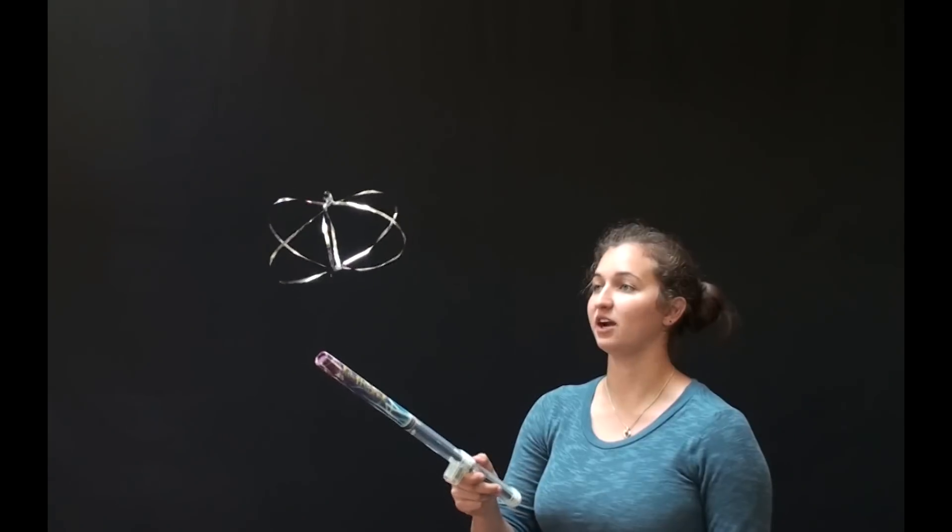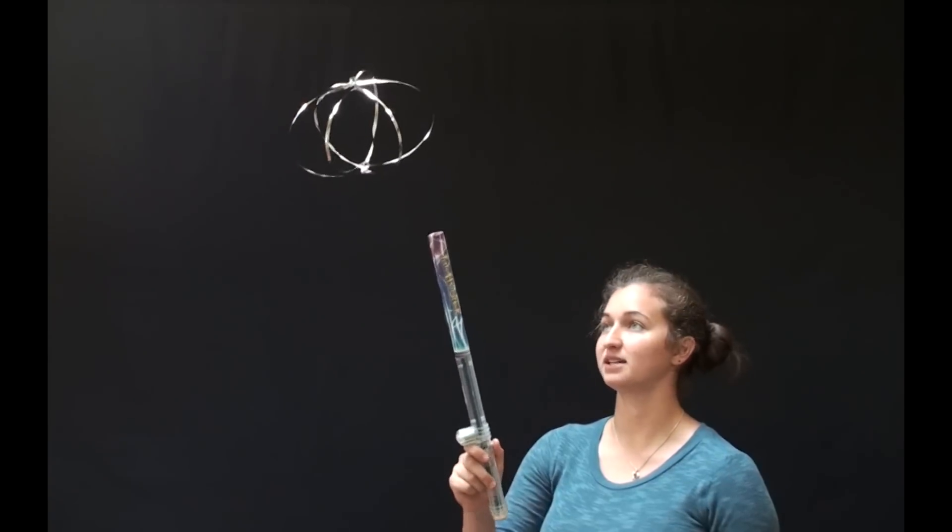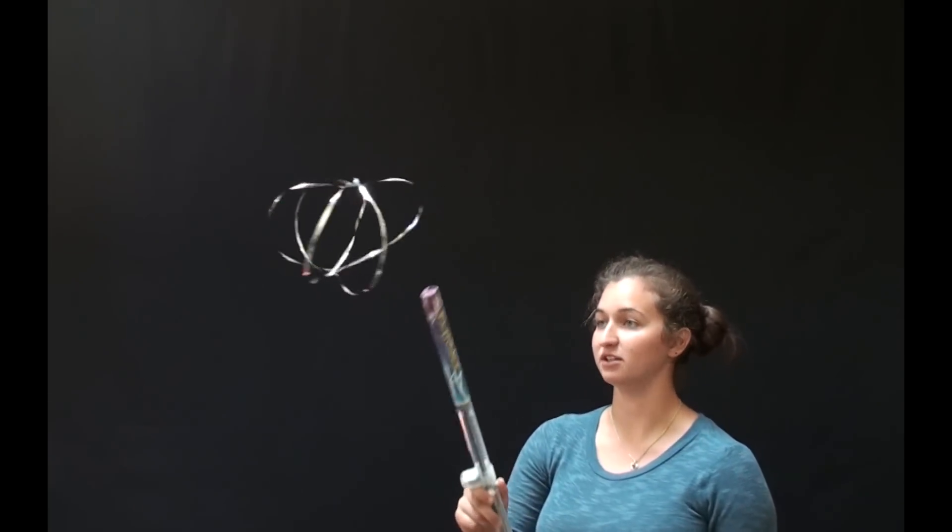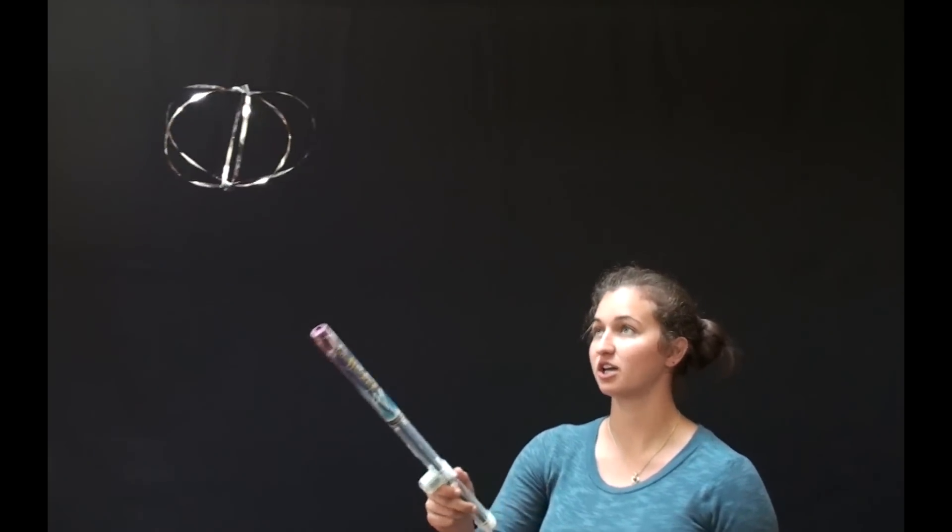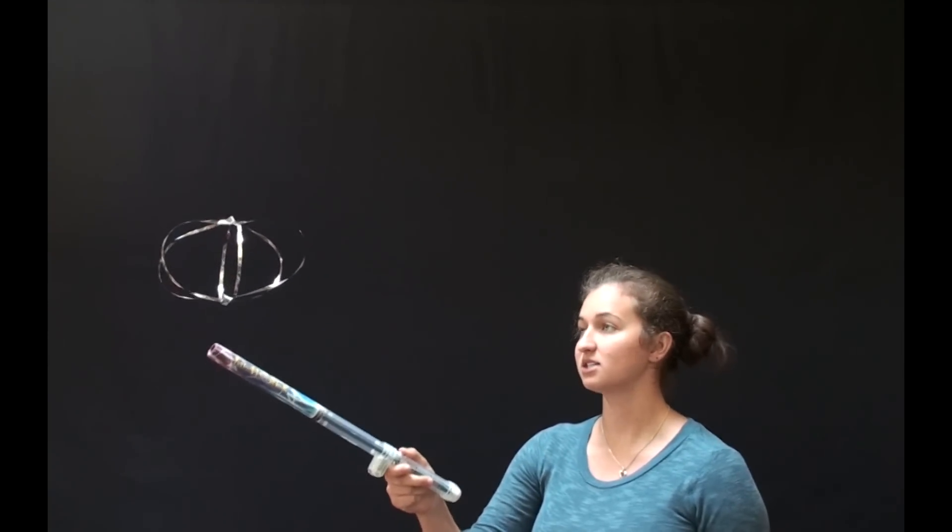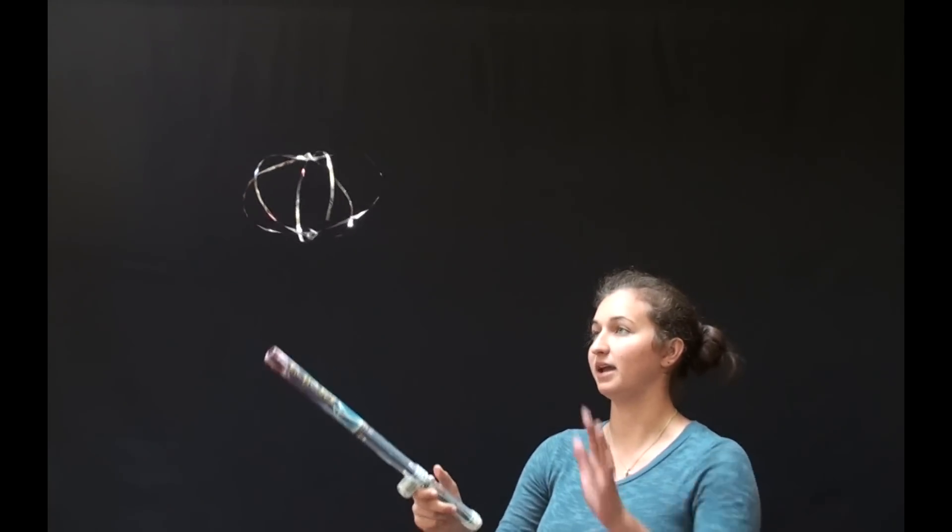When the mylar toy floats in the air, it has its own electric field. It repels from the funfly stick because they have the same charge. However, if another object enters the field and the object is neutrally charged, the electric field induces opposite charges in that object. This causes the toy to be attracted to it. For example, my hand.